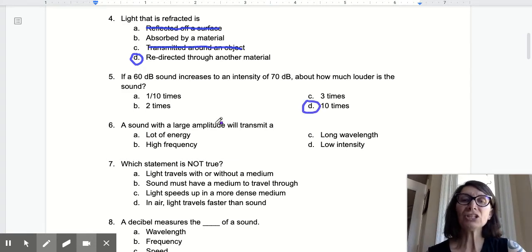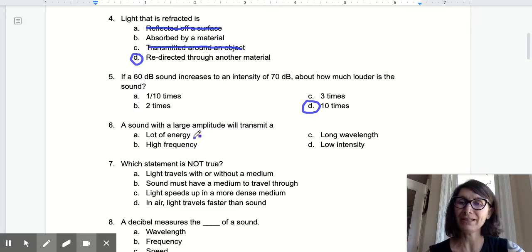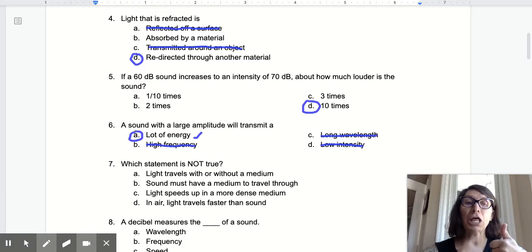A sound with a large amplitude will transmit a lot of energy. I've been looking at a ton of graphs of energy and amplitude. Frequency and amplitude, they don't really have a relationship. A wavelength doesn't really have a relationship. I know amplitude and intensity has a relationship. And if it's large amplitude, it's not going to be low intensity. So my best choice is amplitude affects energy. And the larger the amplitude, the larger the energy.